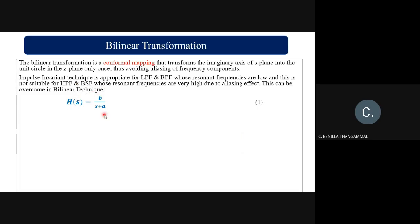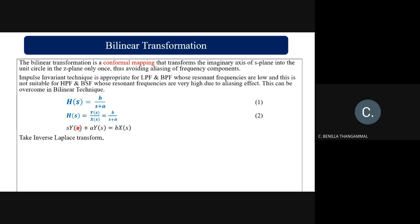To derive the bilinear transformation, take a single-order function H(s) = b/(s+a). This can be written as Y(s)/X(s) = b/(s+a). Cross-multiplying gives s·Y(s) + a·Y(s) = b·X(s). Taking the inverse Laplace transform: dy(t)/dt + a·y(t) = b·x(t). Now we integrate both sides between the limits (n−1)T to nT.